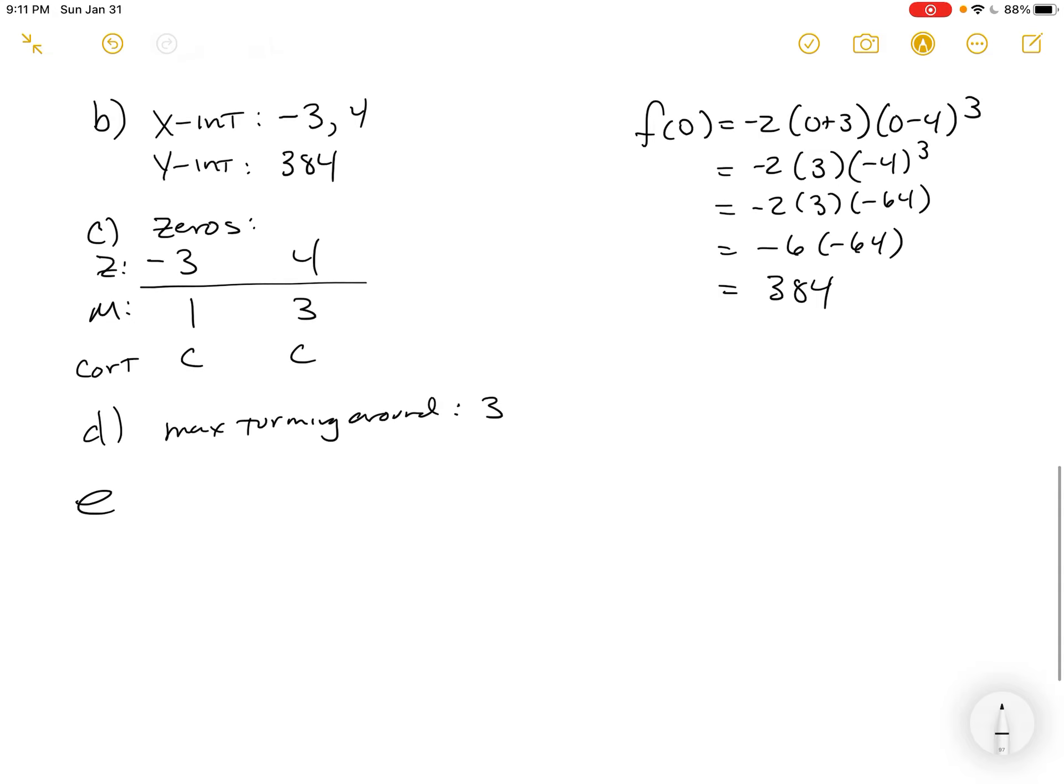So, if we go and remind ourselves about the graph, we would come in here and we would put at negative 3, we put a 0. At 4, we put a 0. And the y-intercept is off the charts. It's way up here at 384. That's way, it should be even farther off than that. But that's what we're looking at as we come through.